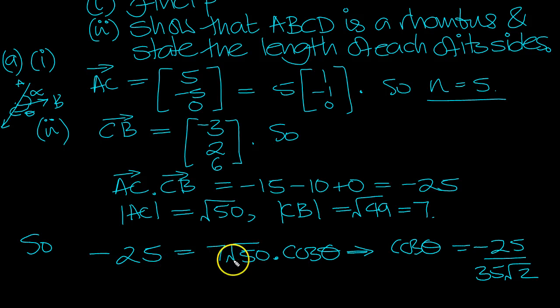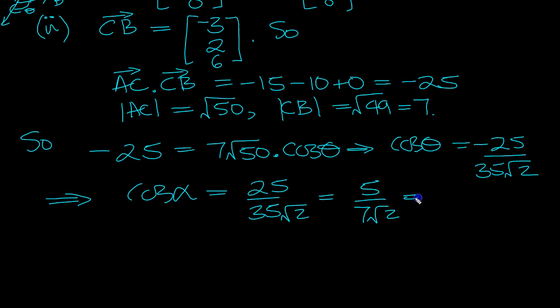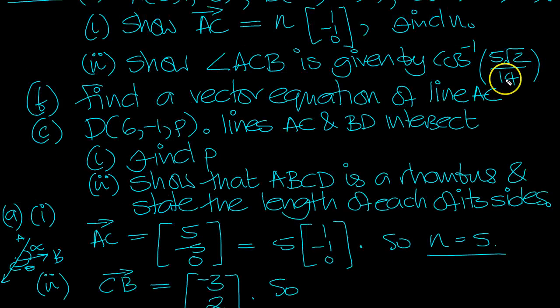So we're going to drop the minus and we'll use alpha here, the acute angle. Minus 25, the dot product, is equal to 7 root 50 times cosine theta. Cosine theta then will equal minus 25 over 7 root 50. There's a root 25 which is 5, so that's 35 root 2. So that implies then that cos alpha is 25 over 35 root 2, which equals 5 over 7 root 2, which equals 5 root 2 over 14. That's the acute angle between the two vectors, which is what we wanted to show.